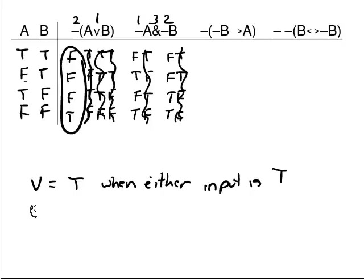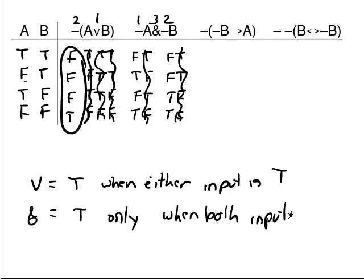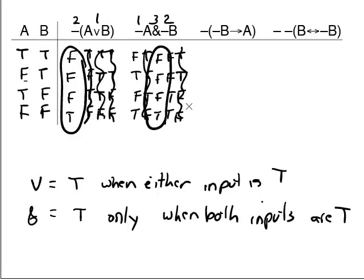Now work on the ampersand. The rule for ampersand: it's true only when both inputs are true. So: false ampersand false is false, true and false is false, false and true is false, and true and true is true. That's our result — let's circle it.